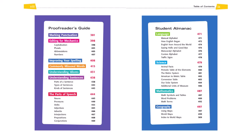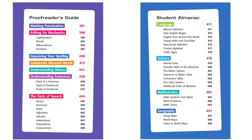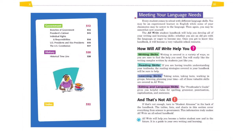The proofreader's guide provides rules and examples for punctuation, mechanics, spelling, usage, idioms, sentences, and the parts of speech. The student almanac includes exciting pages on language, science, mathematics, and geography, perfect to inspire writing across the curriculum.